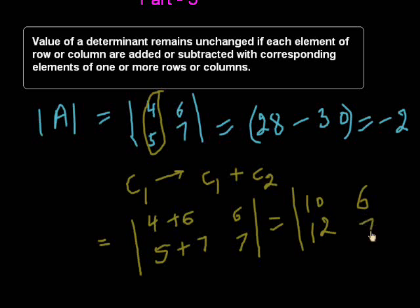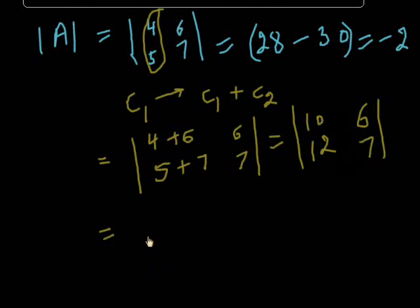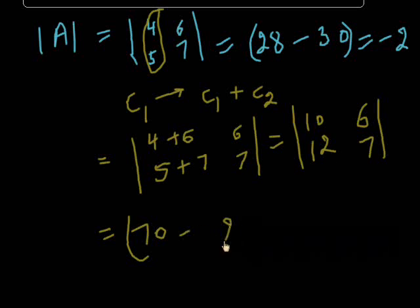4 plus 6 is 10, 5 plus 7 is 12, 6 and 7. Now we calculate its value: 10 into 7 is 70, minus 12 into 6 is 72. This is also value minus 2.